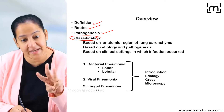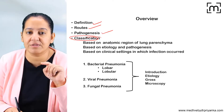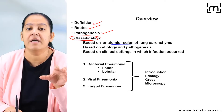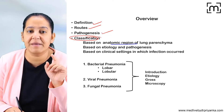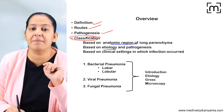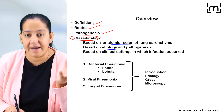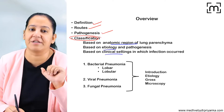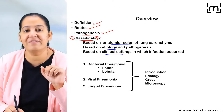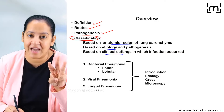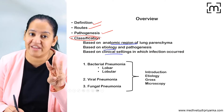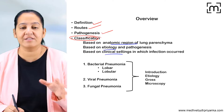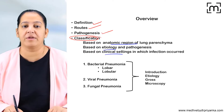We will see three types of classification: the classification based on the anatomical region of the lung which is involved, the classification based on the etiology and pathogenesis, and the classification based on the clinical settings in the community. So we will see three types of classification of pneumonias, and then we will see the details of various types of pneumonia.